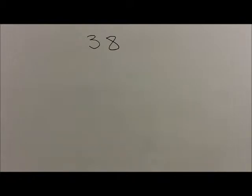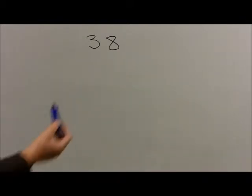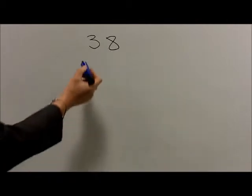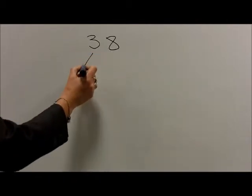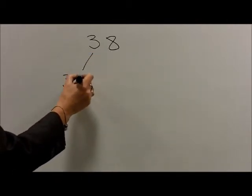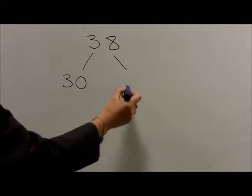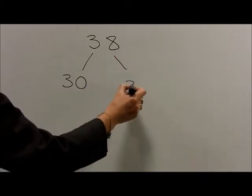So for example, with the number 38, this is split into its tens and its units. The 3 tens make 30 and the 8 units make 8.